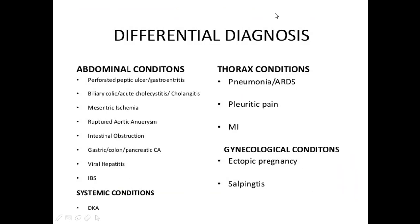What is the differential diagnosis of acute pancreatitis? Differential diagnosis includes abdominal, systemic, thoracic, and gynecological conditions. Abdominal conditions include: perforated peptic ulcer, biliary colic, acute cholecystitis, cholangitis, mesenteric ischemia, ruptured aortic aneurysm, intestinal obstruction, gastric volvulus, pancreatic carcinoma, viral hepatitis, and irritable bowel syndrome.